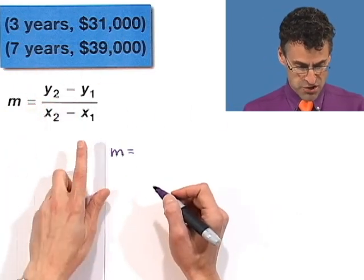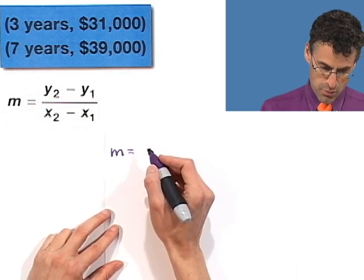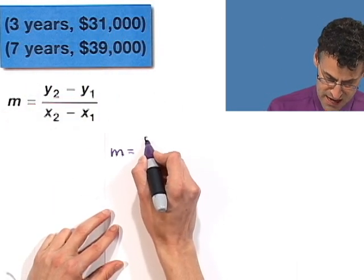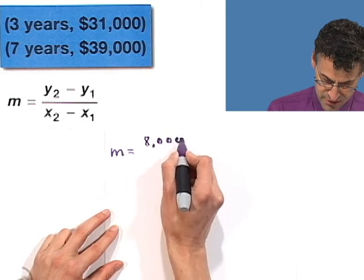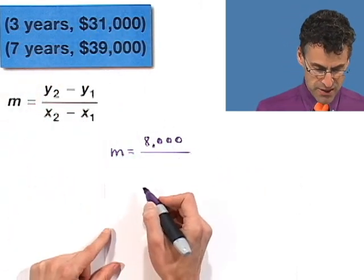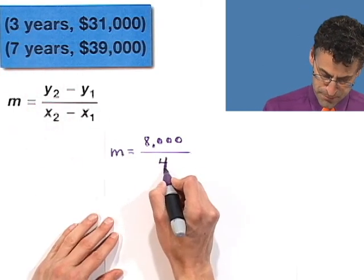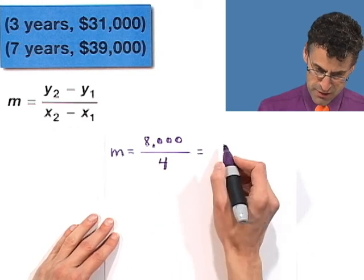Okay, so change in y, that's going to be 39,000 minus 31,000, which is 8,000. I'm just going to write it right down there. You can see 39 minus 31 is 8,000. And then I divide that by the change here, which is 7 minus 3, which is 4. And so what is that equal to? Well, that equals 2,000.